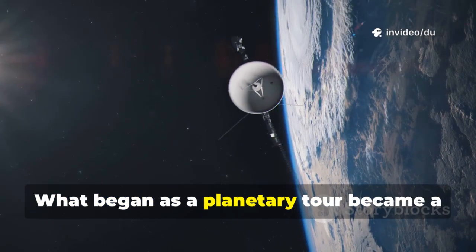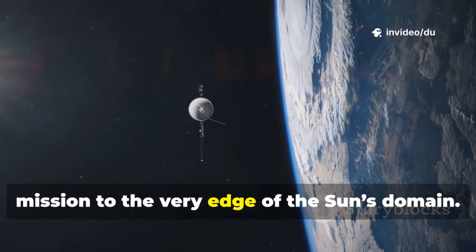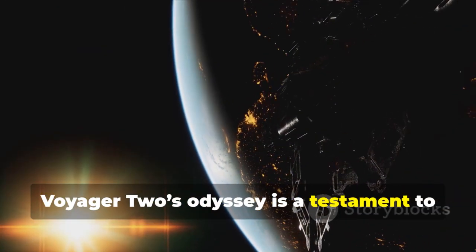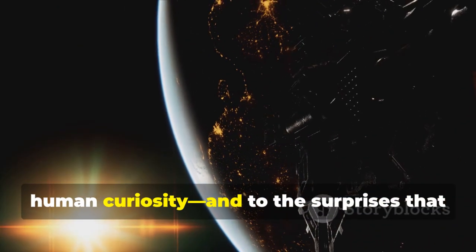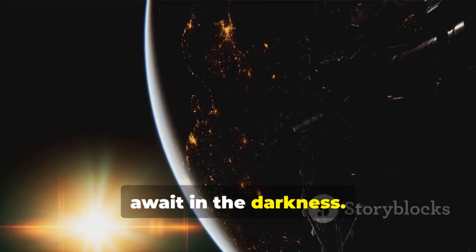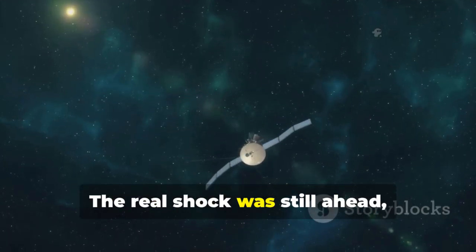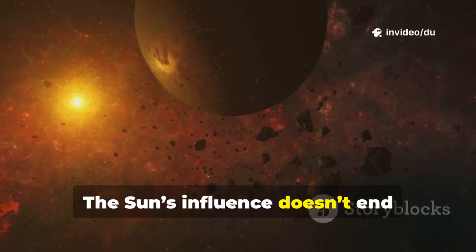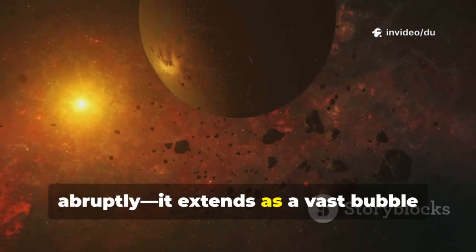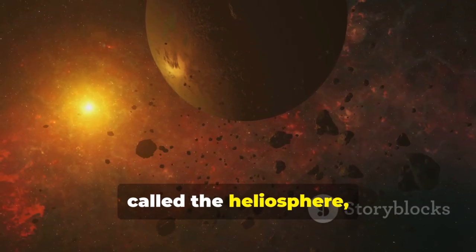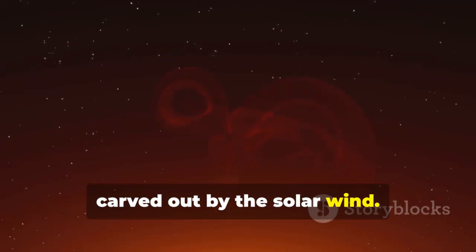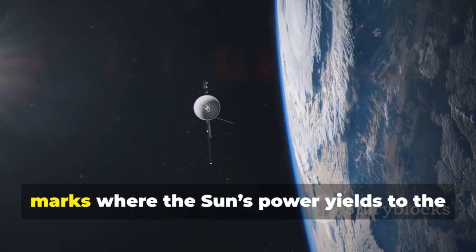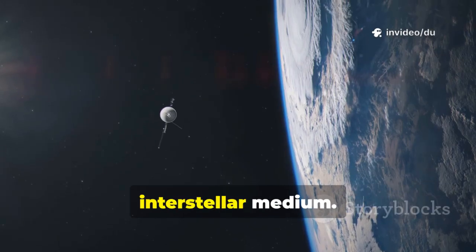What began as a planetary tour became a mission to the very edge of the Sun's domain. Voyager 2's Odyssey is a testament to human curiosity and to the surprises that await in the darkness. The real shock was still ahead, waiting beyond the planets. The Sun's influence doesn't end abruptly. It extends as a vast bubble called the heliosphere, carved out by the solar wind. The edge of this bubble, the heliopause, marks where the Sun's power yields to the interstellar medium.